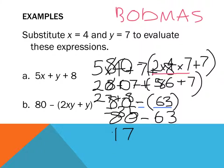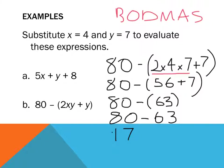80 subtract 63 gives me an answer of 17. One step at a time. Really, really slowly work using those orders of operations.